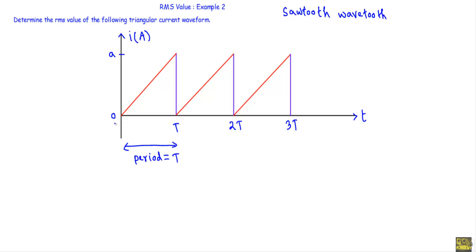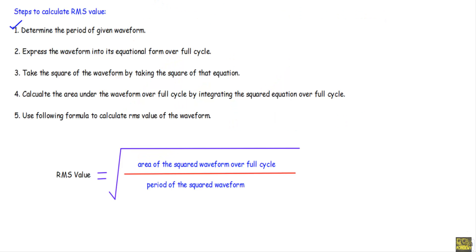Within this zero to T time interval, our current is changing linearly and it will have a maximum amplitude of A. So the period of the triangular waveform is equal to T. After that I will express the waveform in its equational form over the full cycle.